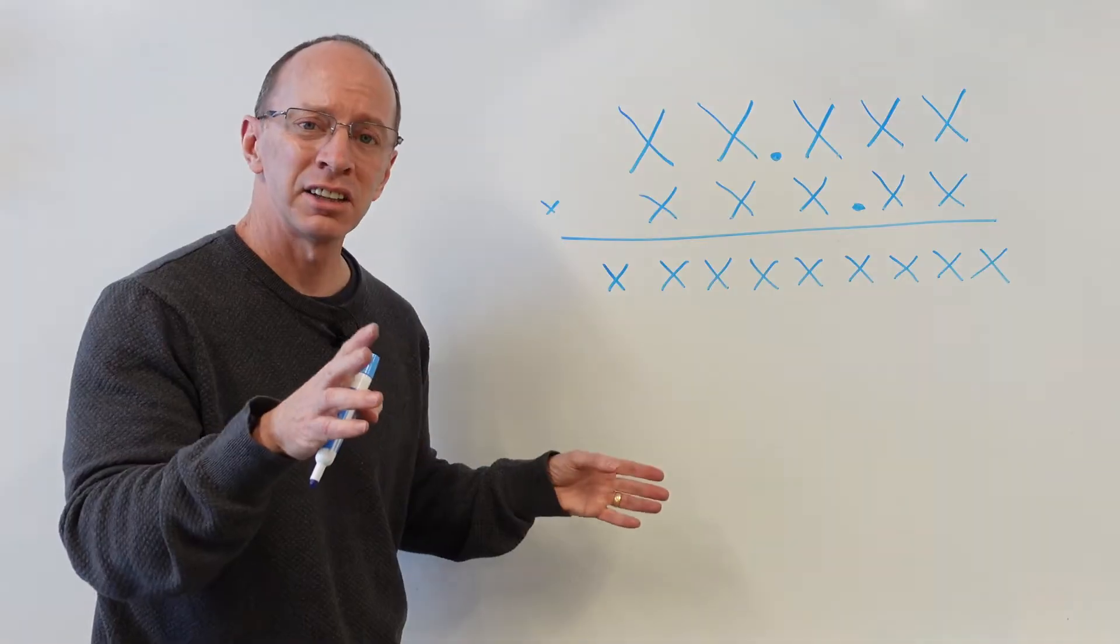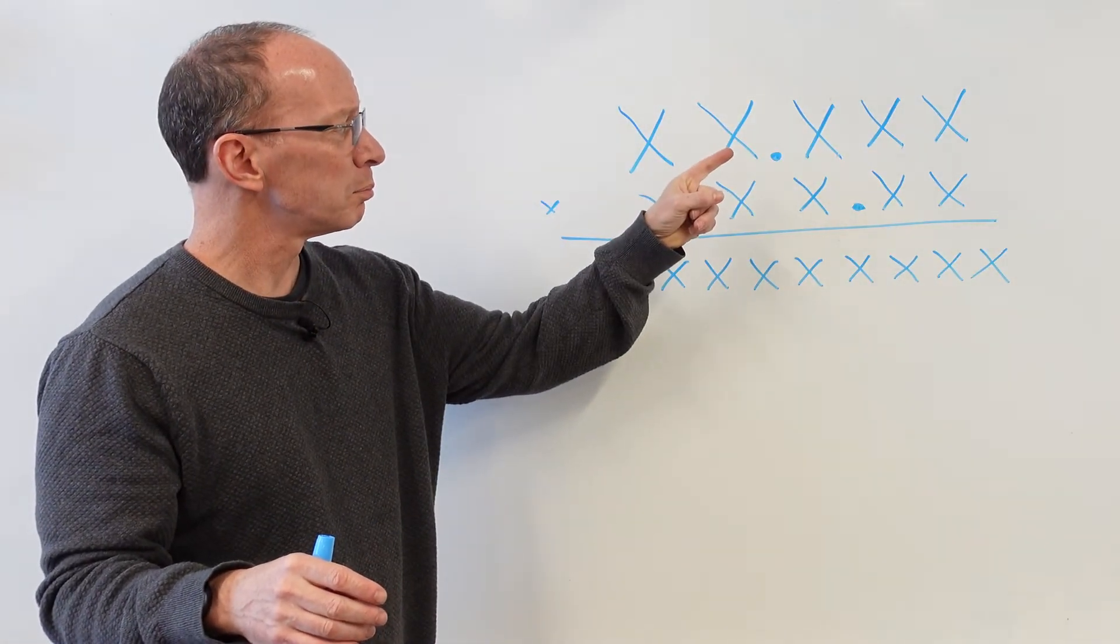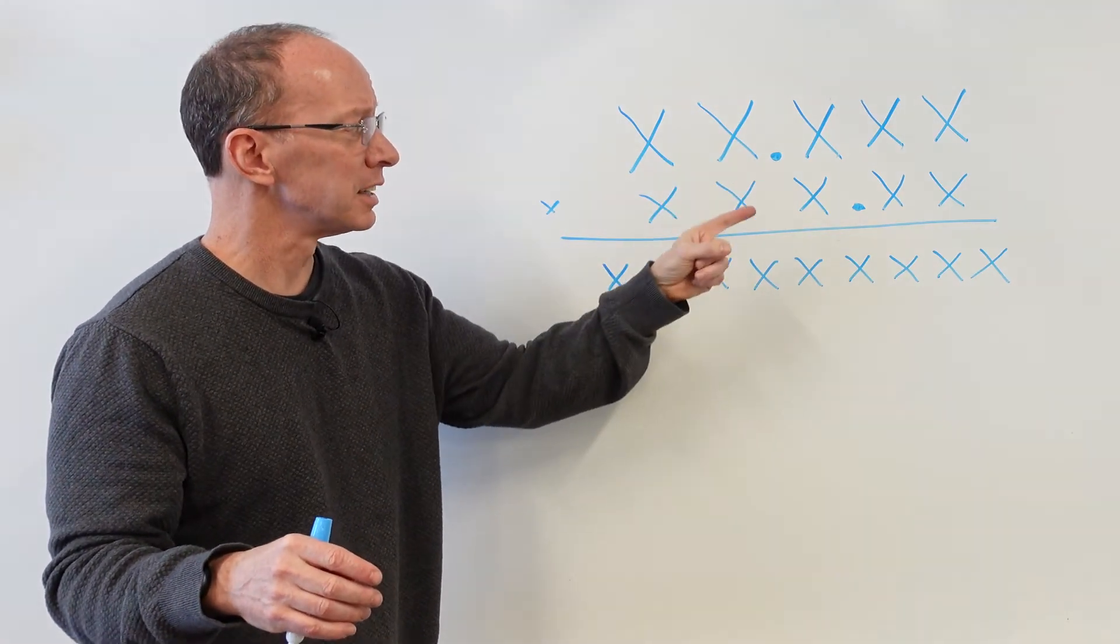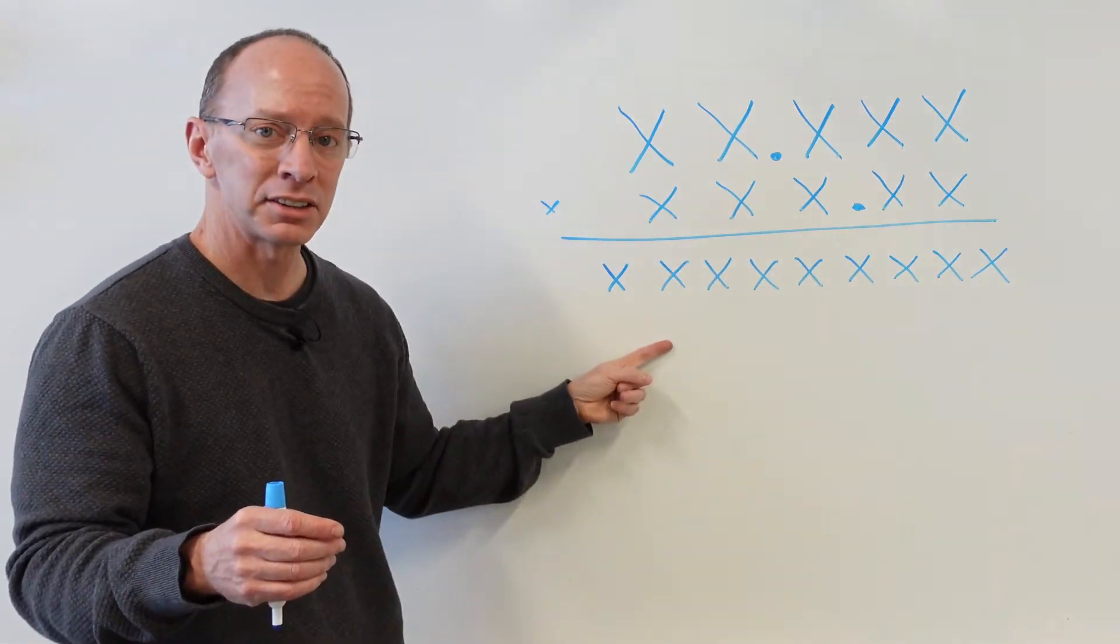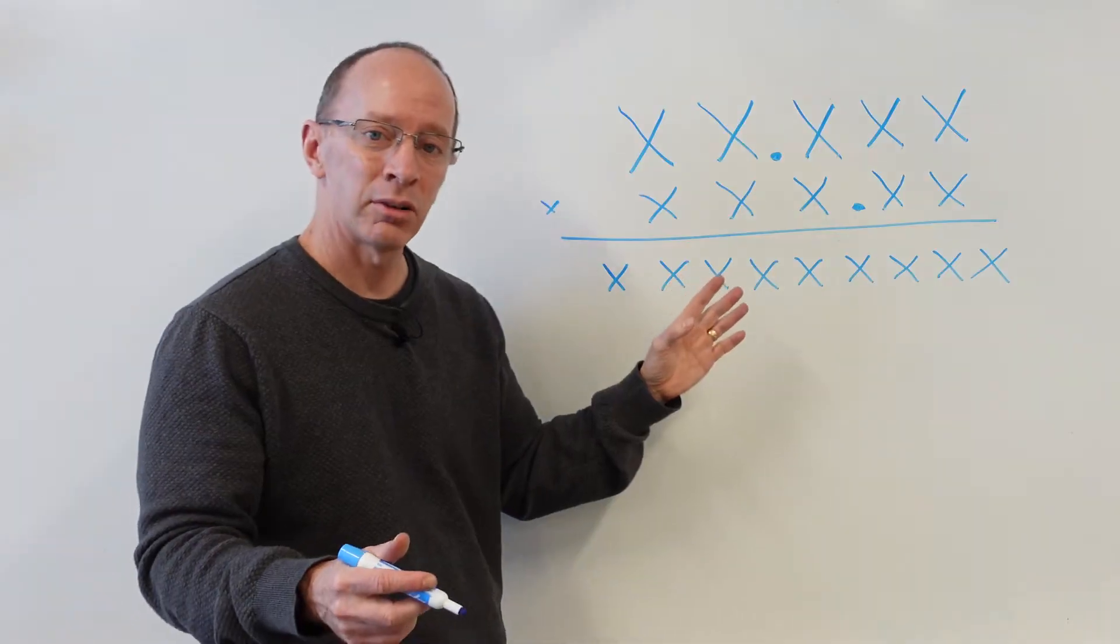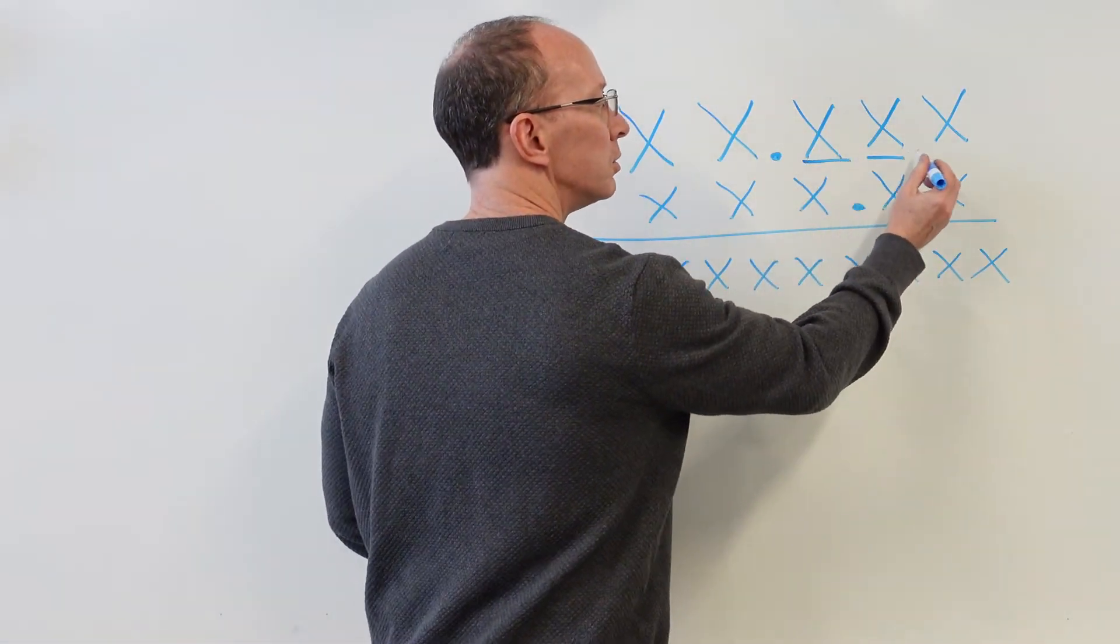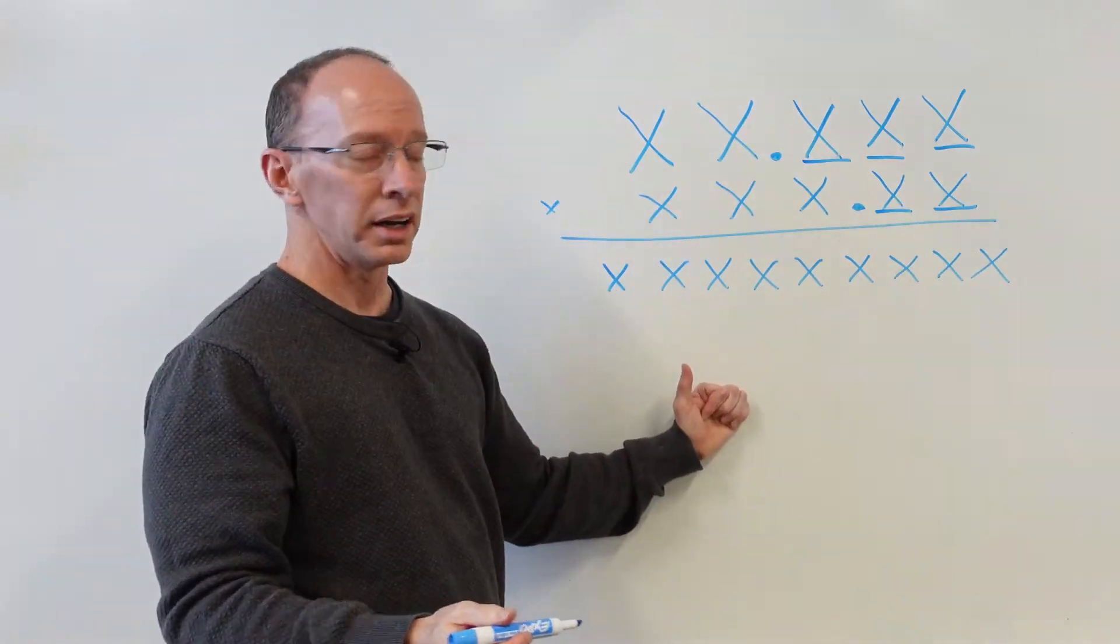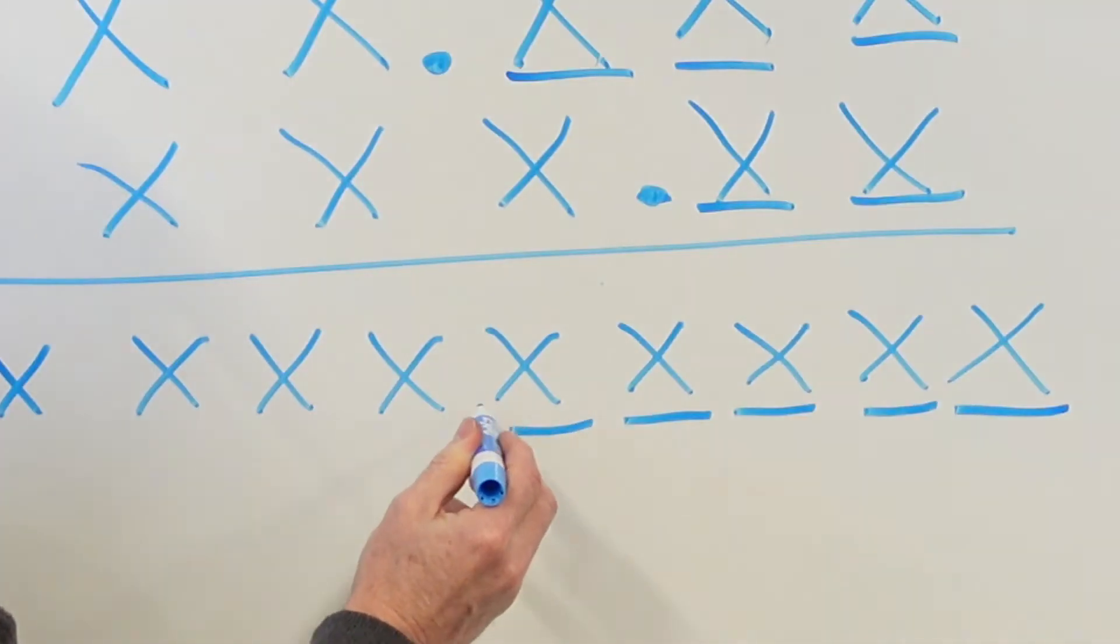Here's a problem. Kind of looks silly. But I have xx point xxx times xxx point xx. I need to figure out where to put the decimal point in my answer. Remember, we just count the numbers behind the decimal point. So we go 1, 2, 3, 4, 5. And then I start counting this way. 1, 2, 3, 4, 5. And I put the decimal point in right there.